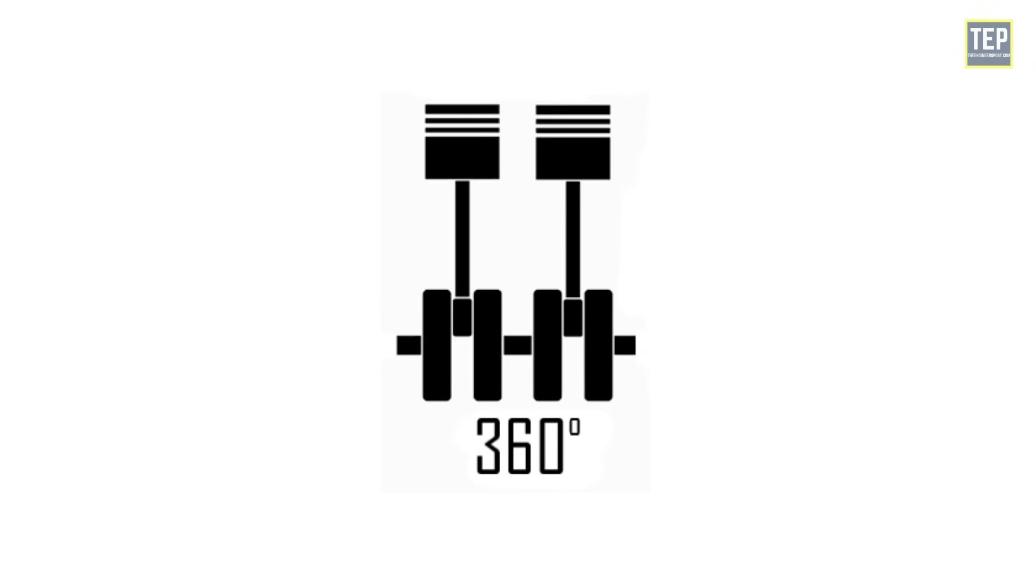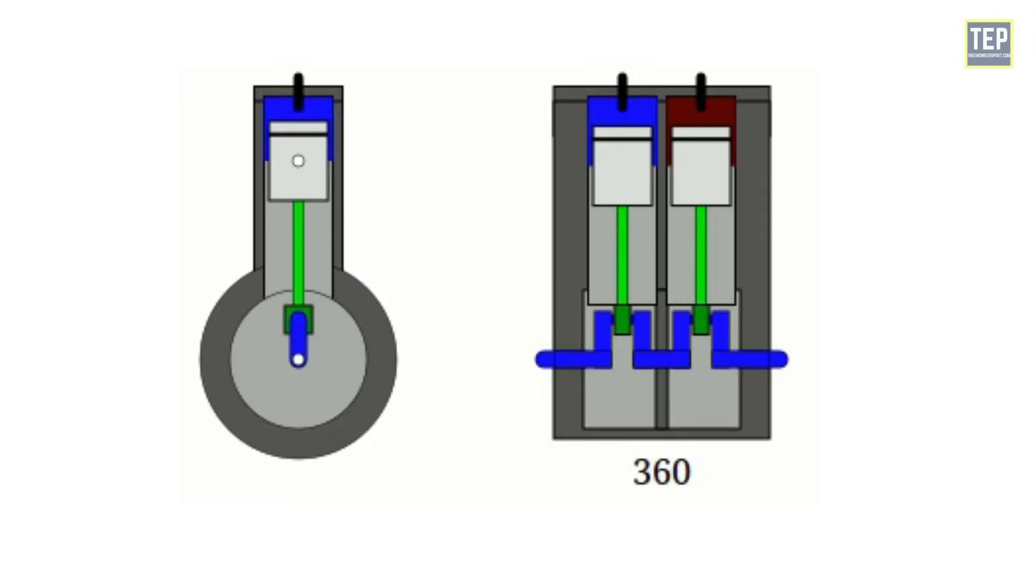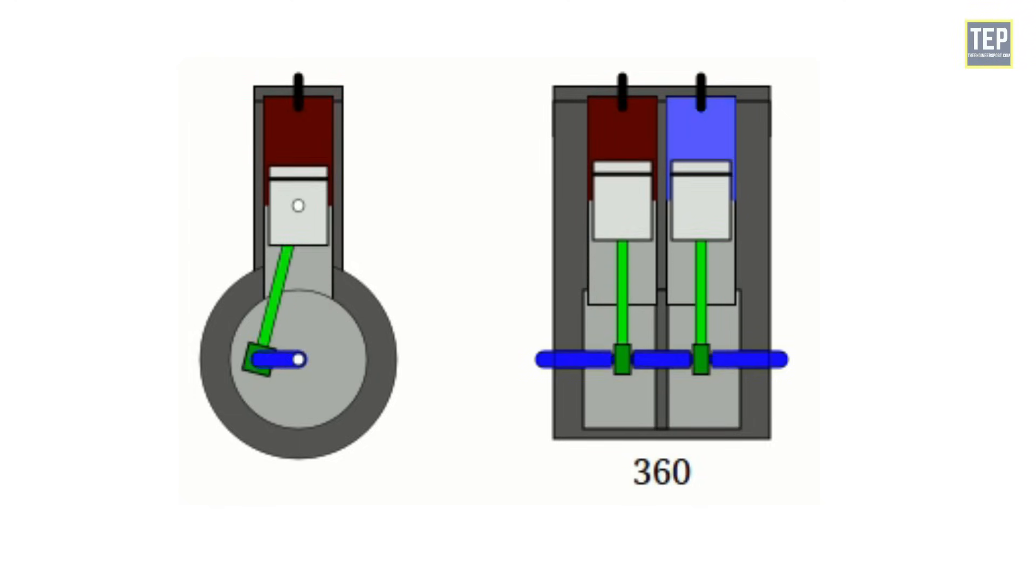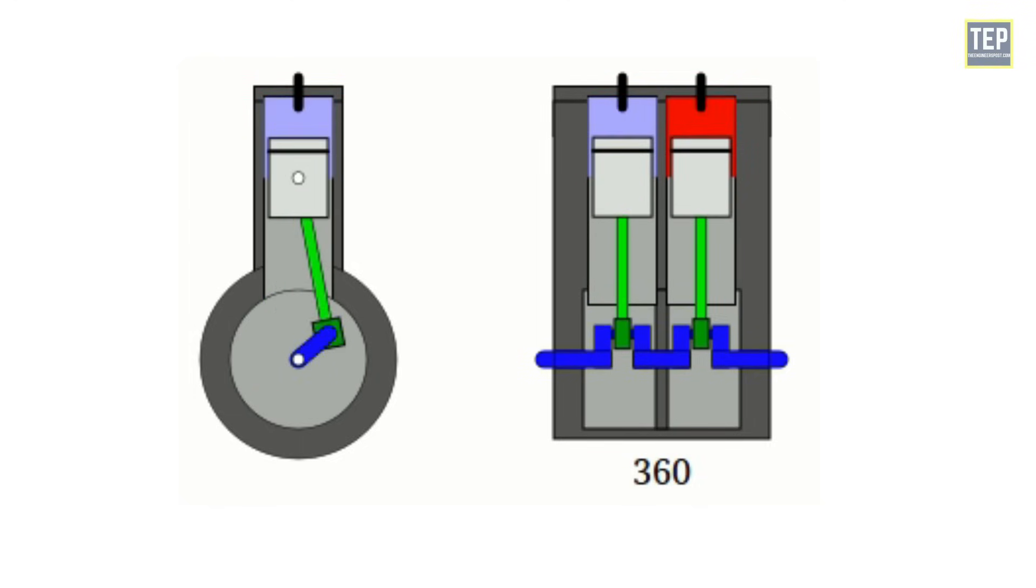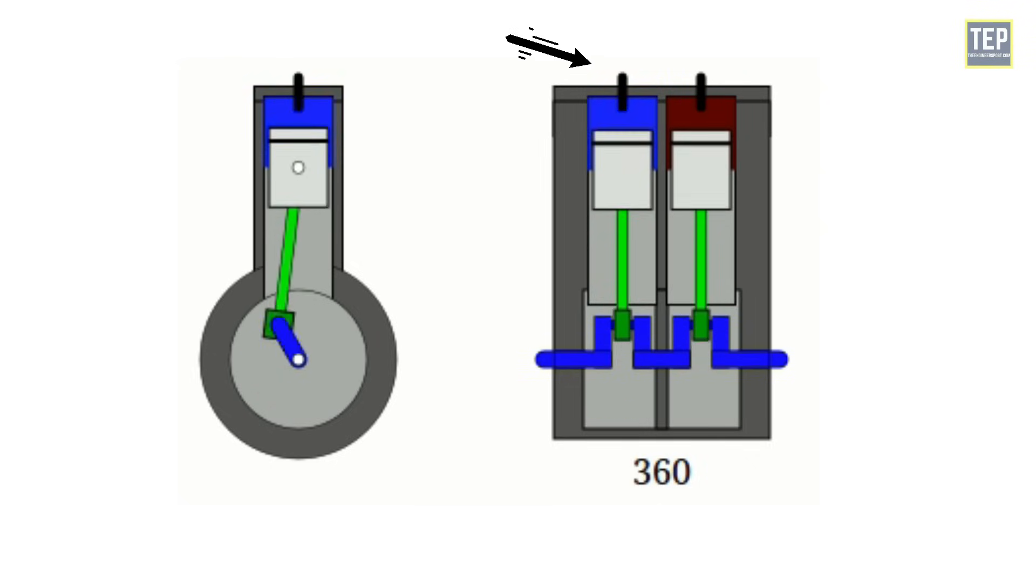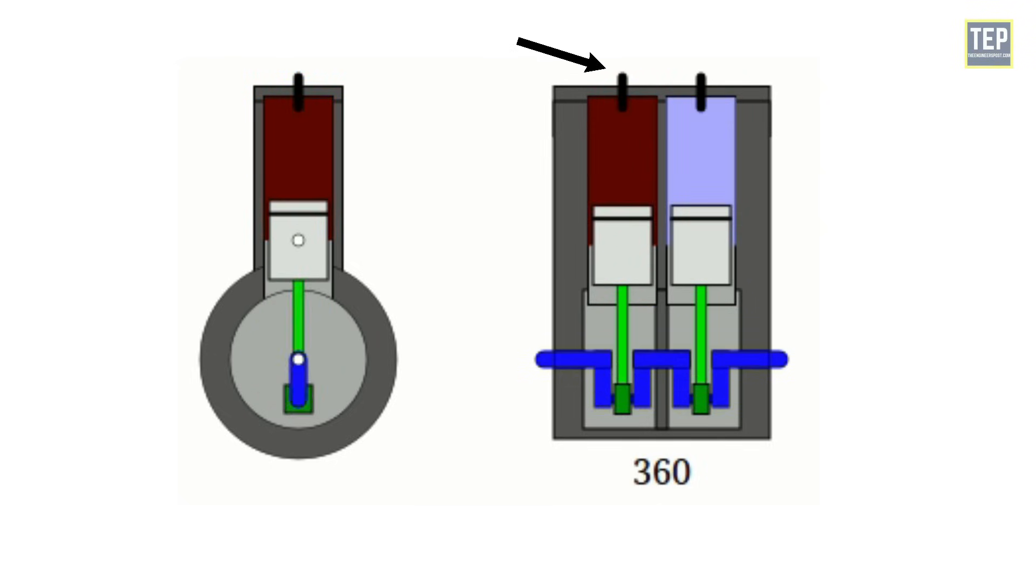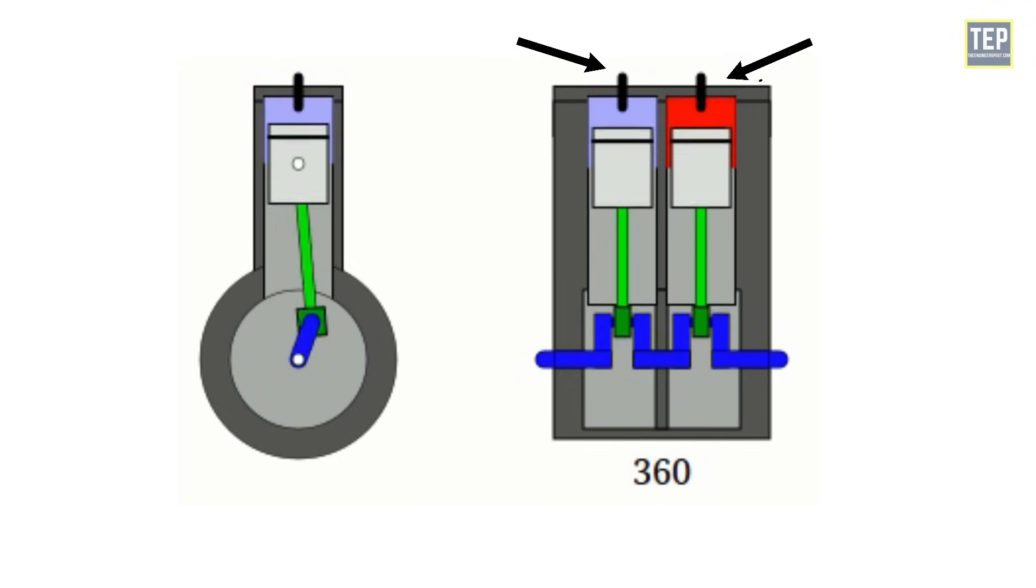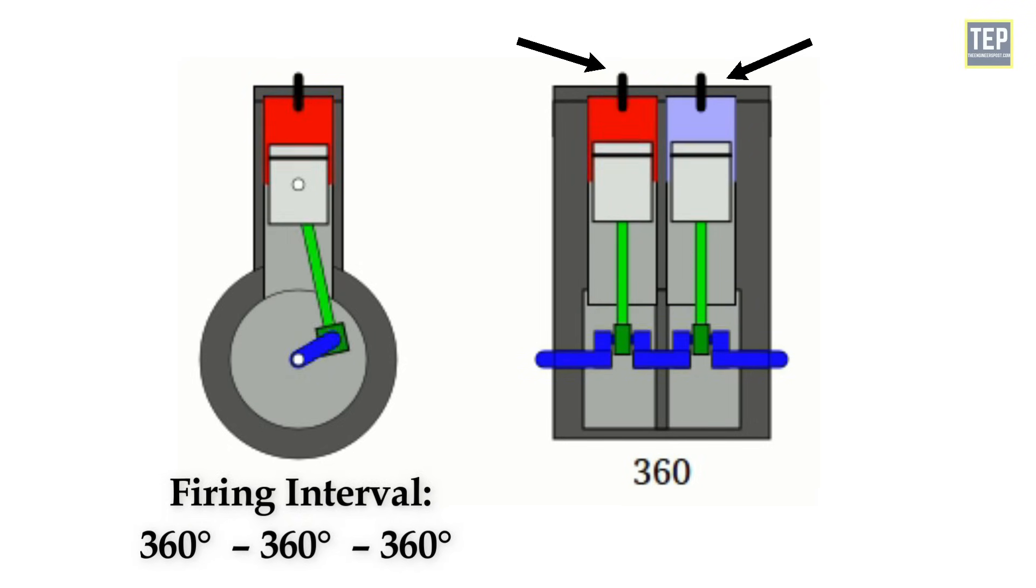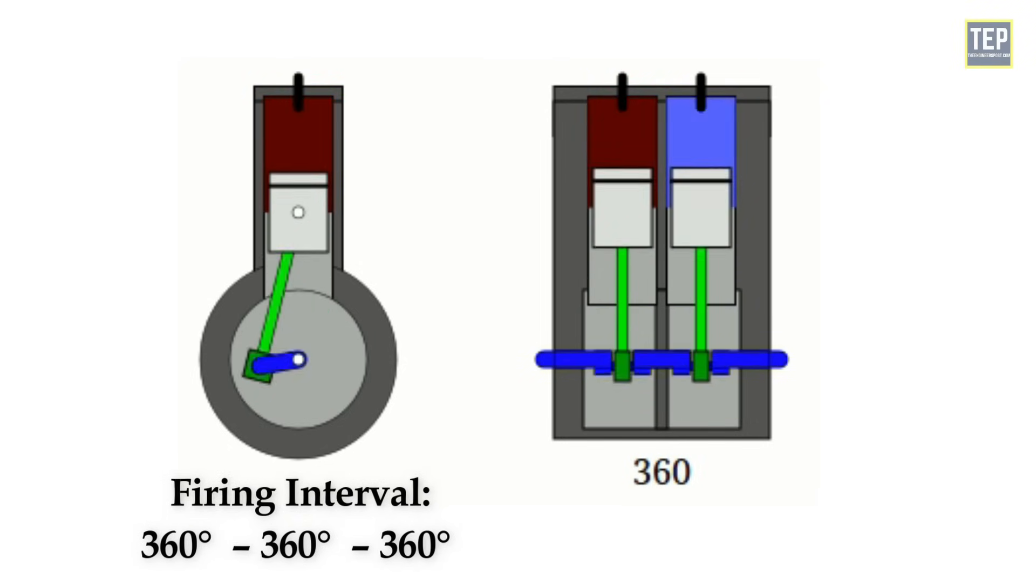Let's start with the 360-degree angle. In an engine with a 360-degree crankshaft, both pistons move up and down at the same time. However, the firing interval is offset between cylinders, with one cylinder firing during the first crankshaft rotation and then the other cylinder in the following rotation. That's why this engine has an evenly firing interval of 360 degrees.